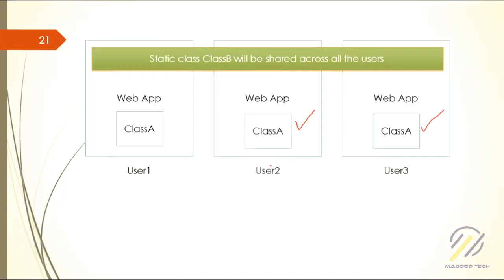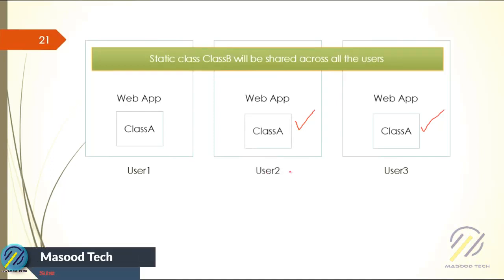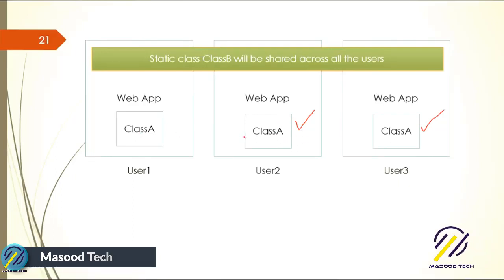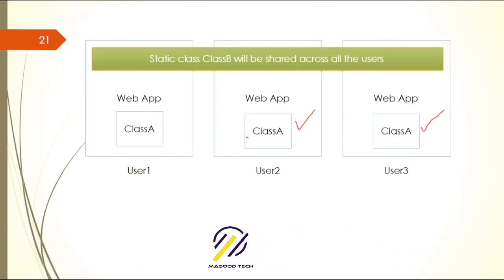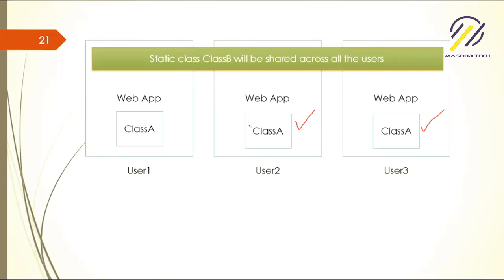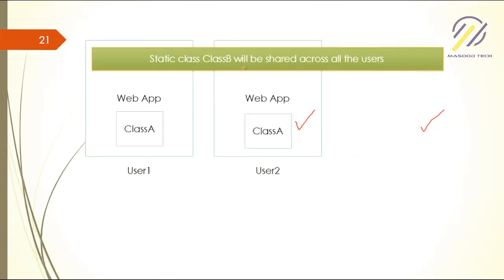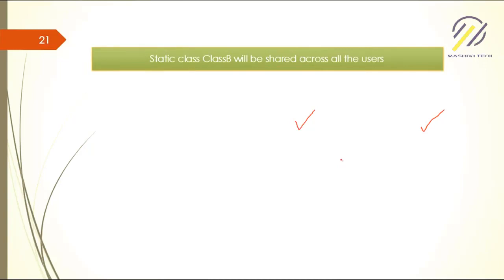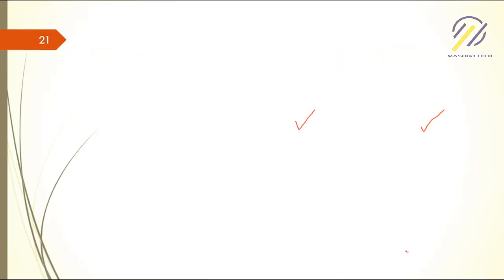If user 2 comes back, class A is created again for them. Class A is replicated once per user — three instances for three users — but class B is shared across all of them. When a user leaves, their class A is gone. Only when you close the application entirely do the static members go away.